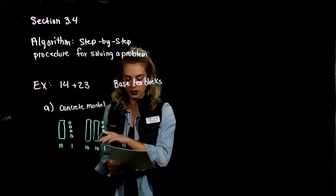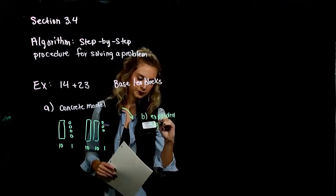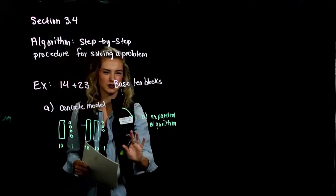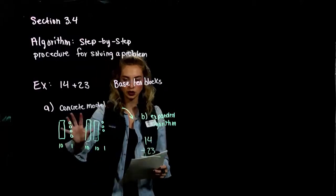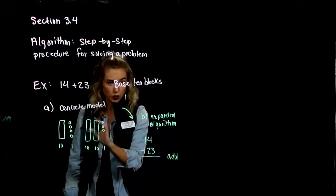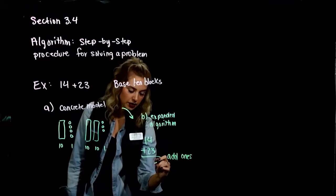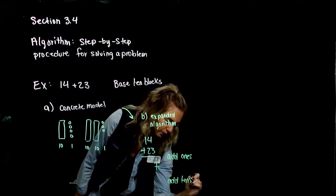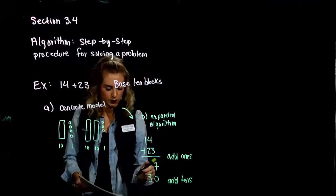We work from the concrete model to an expanded algorithm. This takes the concept and makes it more algebraic — we physically write it down. If I've got 14 and I'm adding 23, we add the individual pieces together. Adding the ones: 4 and 3 gives us 7. Then we add the tens: 2 and 1 gives us 3, so we have 30. Combining those gives us 37.